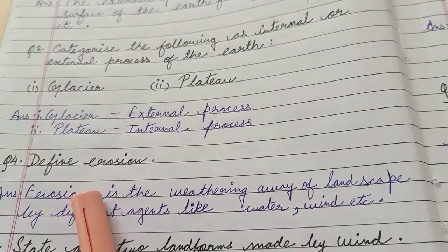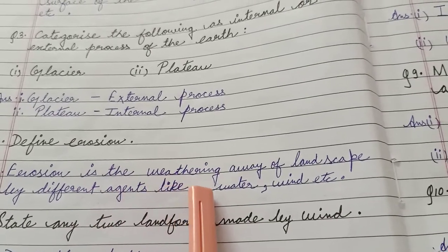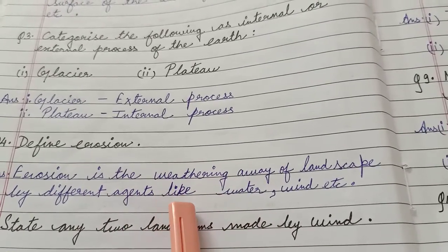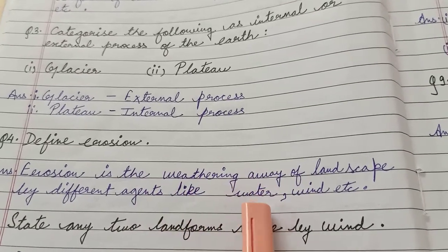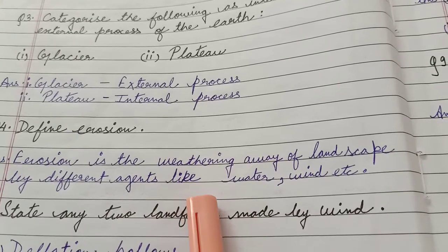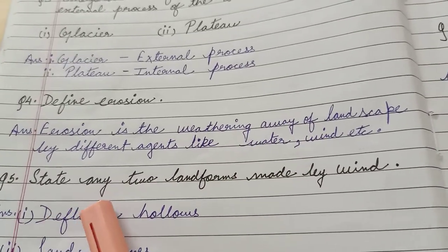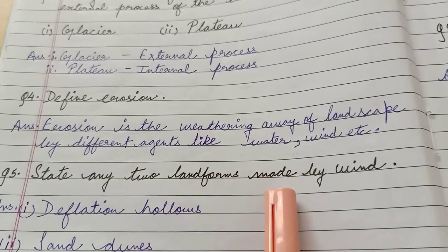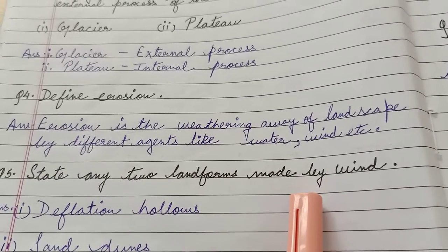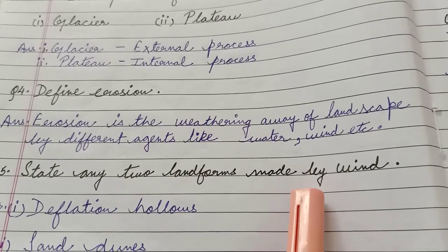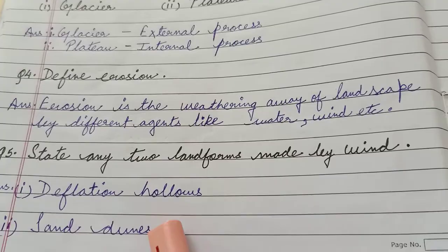Question number 4: define erosion. Erosion is the weathering away of landscape by different agents like water, wind, etc. Question number 5: state any two landforms made by wind. First, deflation hollows; second, sand dunes.